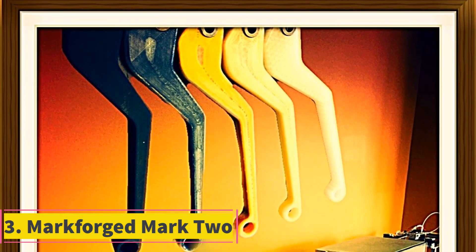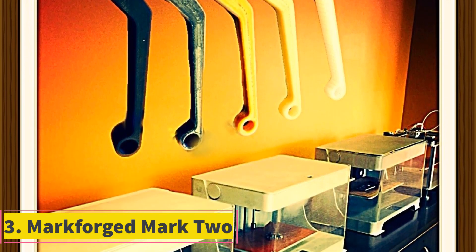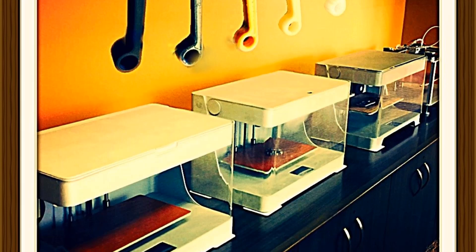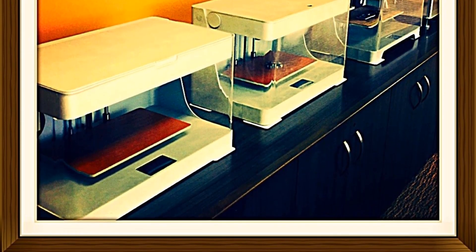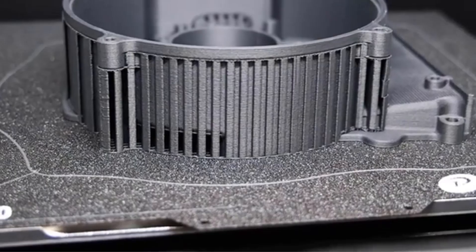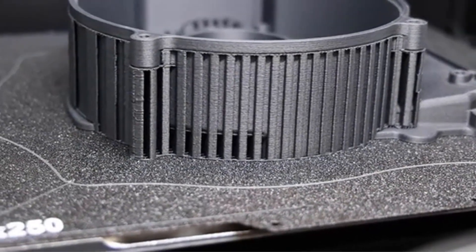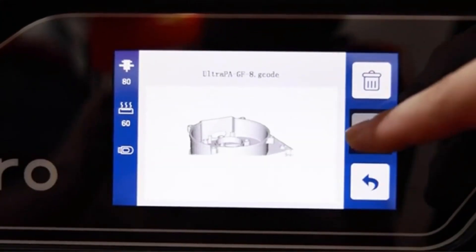Number 3: Markforged Mark II. And fiber of the user's choice, including carbon fiber via a dual extruder arrangement. Though it is by no means cheap, the innovation on display in this carbon fiber 3D printer is hard to beat. Print resolution ranges from a minimum of 100 microns to 200 microns, allowing for fine details and larger hefty layer prints.